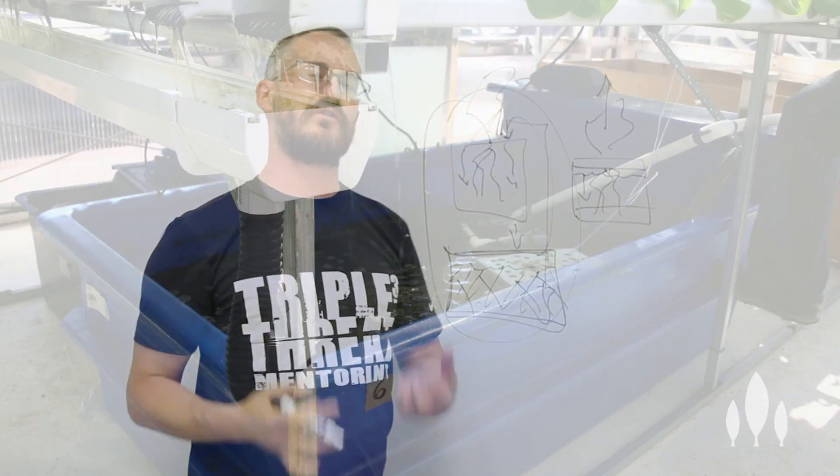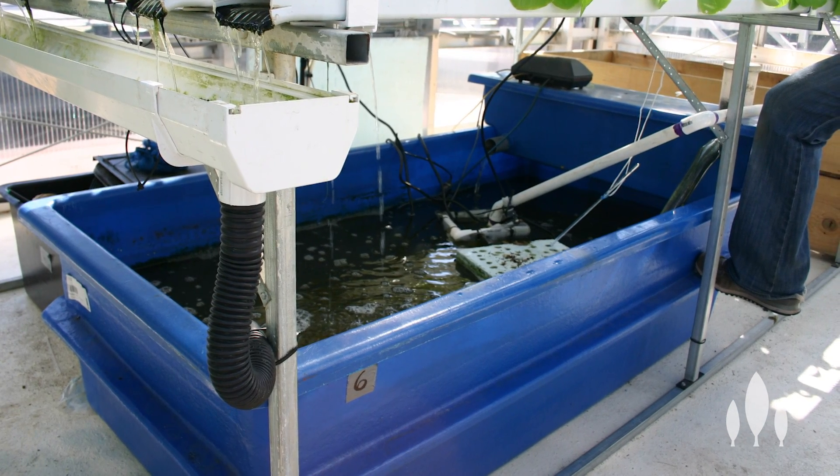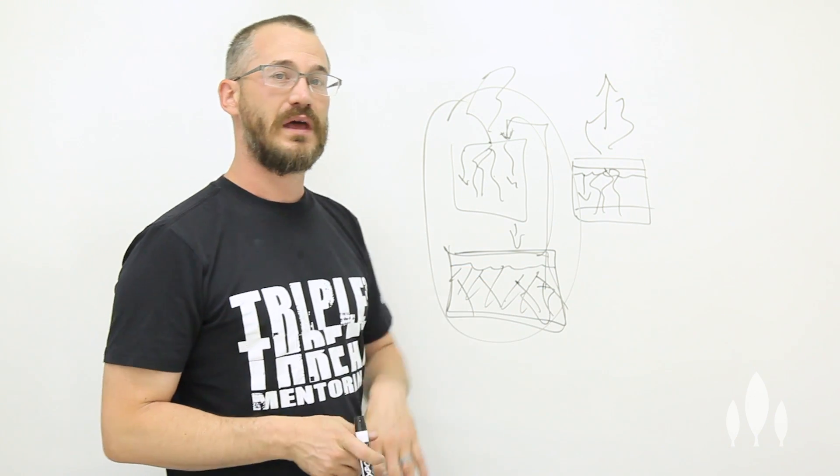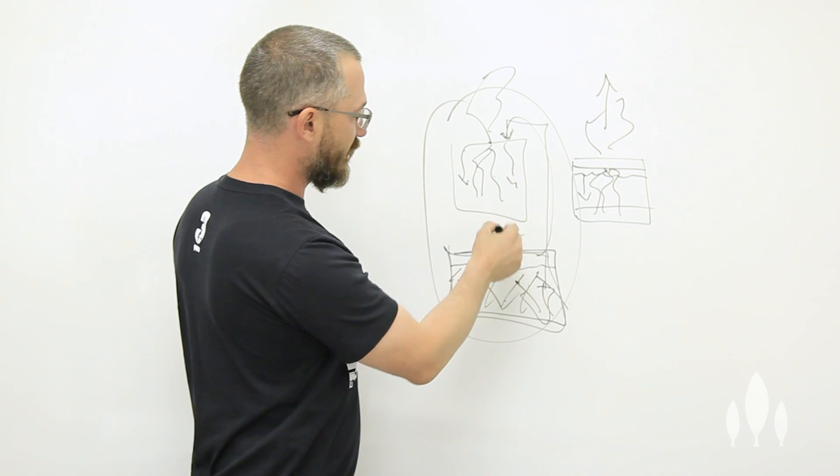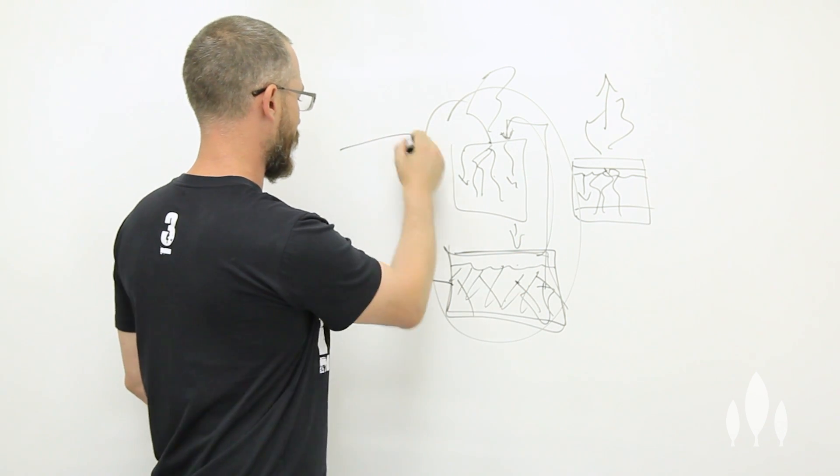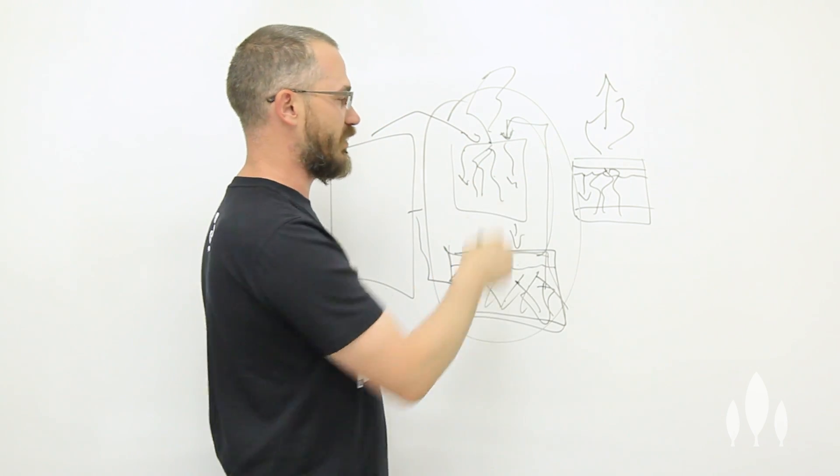The sump tank is also what a lot of people use for mixing their nutrients. So, you actually have to add nutrients and add water on a regular basis. And most people use the sump tank for doing that. Now, in a different embodiment, some of this solution would flow to the sump tank. And the sump tank would deliver it to, basically, a mixing tank, which would deliver it to your plant production container.